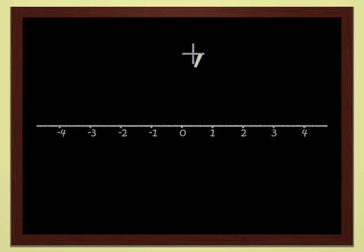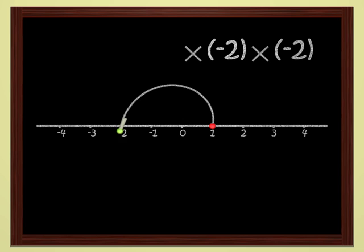More interesting still is multiplication of points. Let's look at multiplication by minus two, for instance. It transforms the point one into the point minus two, of course. And if you multiply again by minus two, you have to do the same thing. Change sides with respect to the origin and double the distance from the origin. You get four, of course.